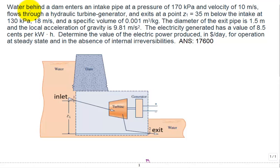So let's solve this problem. We have water behind a dam, and it has an intake, inlet right here at state 1. The pressure at state 1, P1, is given to be 170 kPa, and the velocity V1 of 10 meters per second.